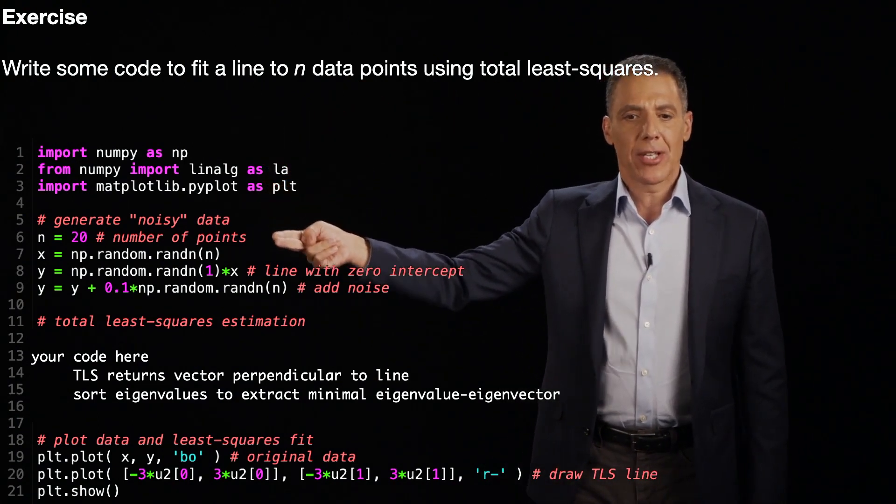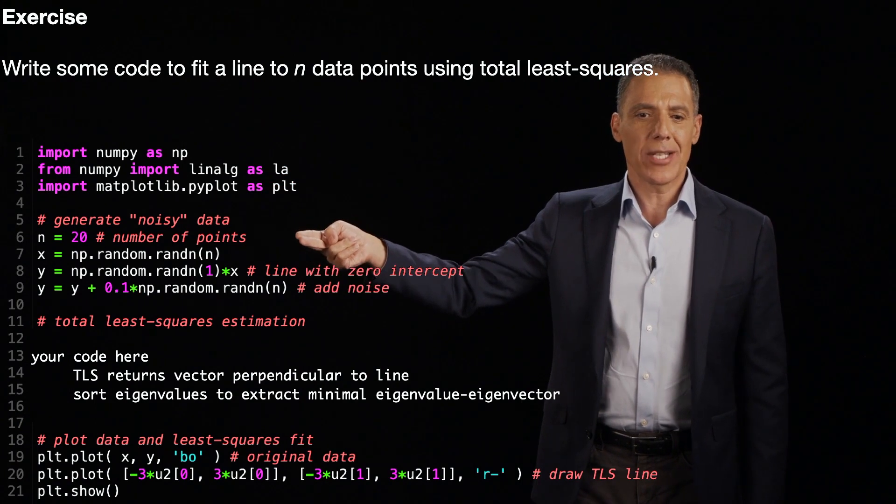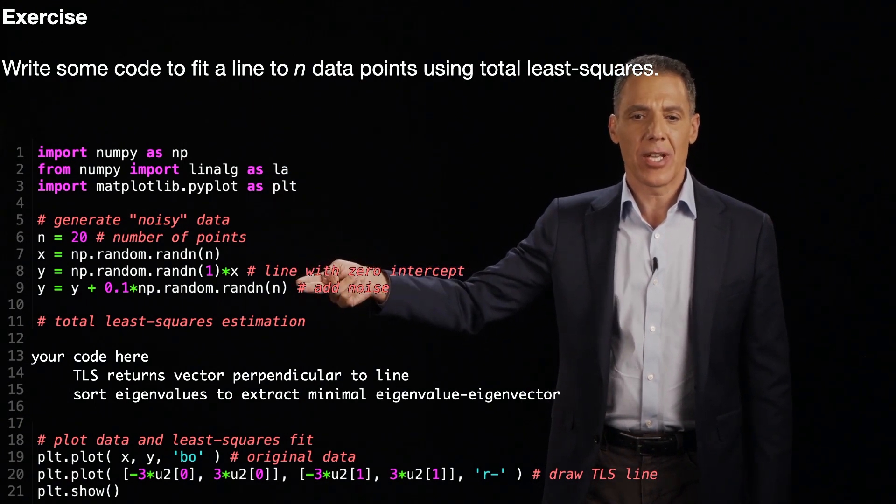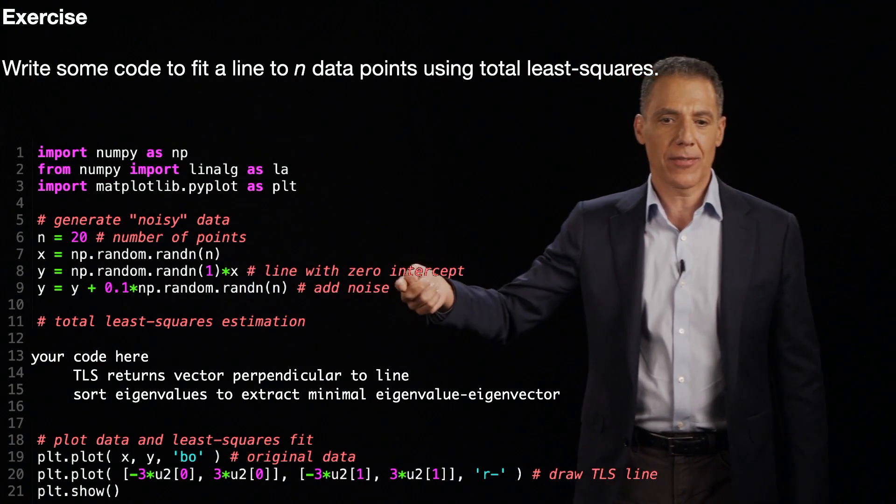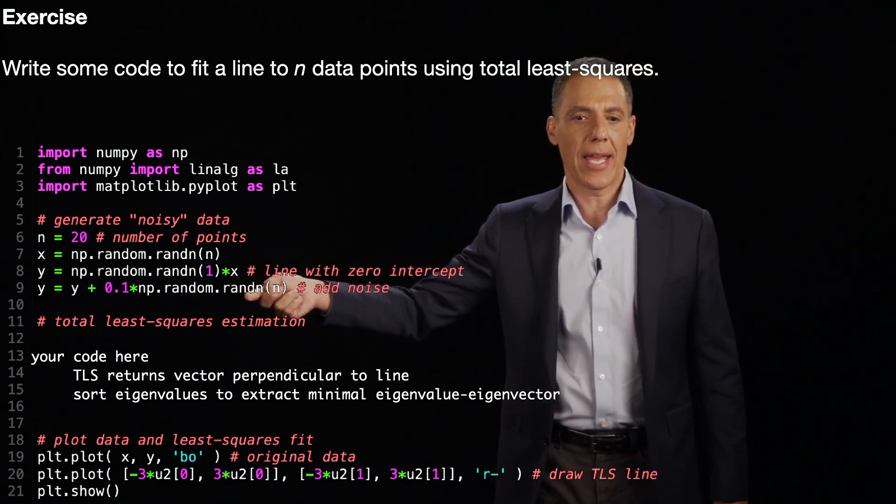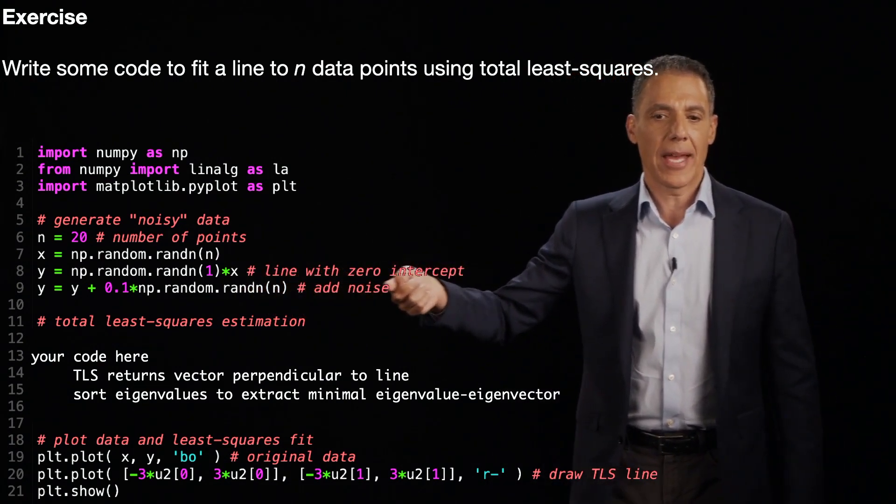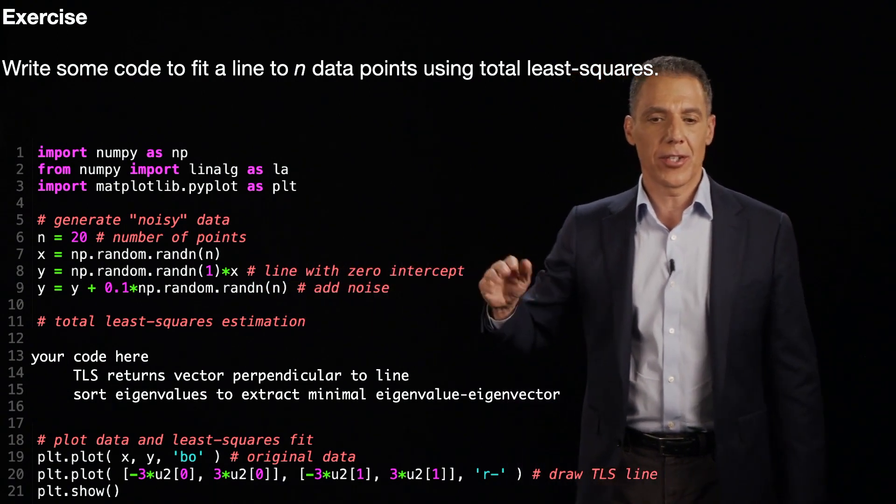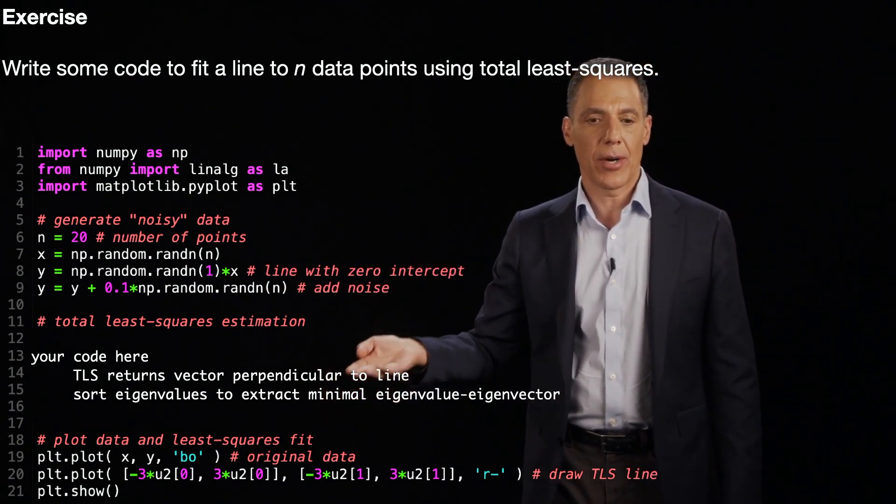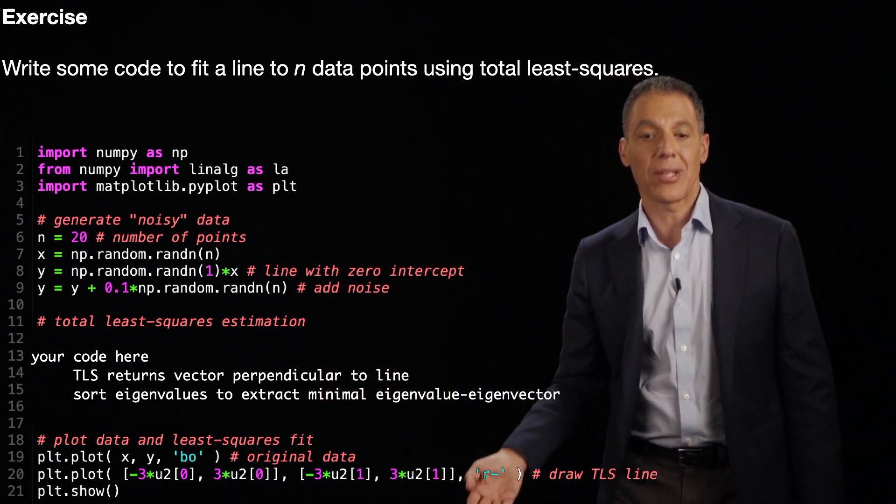Bring in some libraries. This is the same as before. I got a bunch of points. I'm computing the X values. Here is the line. Everything is satisfying a line, and I'm going to go ahead and add in a little bit of noise here, a little bit of jitter. Your code is going to come in right here, and then this is a little bit of plotting code.